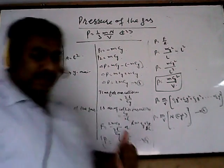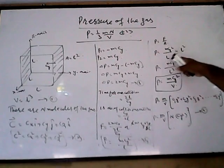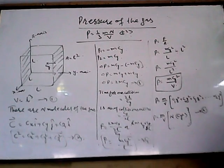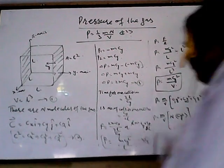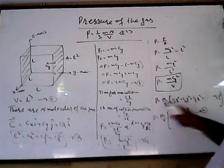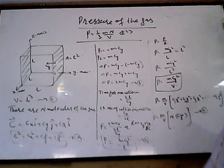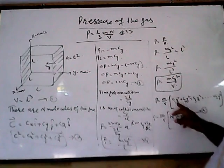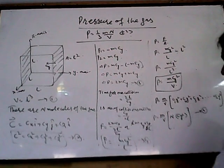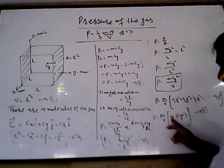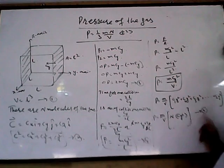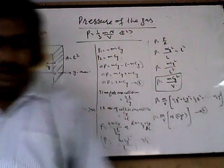Pressure is force upon area, so p = (mcy²/l) / l² = mcy²/l³ = mcy²/v for one molecule. For N molecules, p = m/v · (c1y² + c2y² + ... + cNy²). Taking the mean, p = mN/v · c²y_avg. Up to this point, if you have understood, then the rest becomes easy.